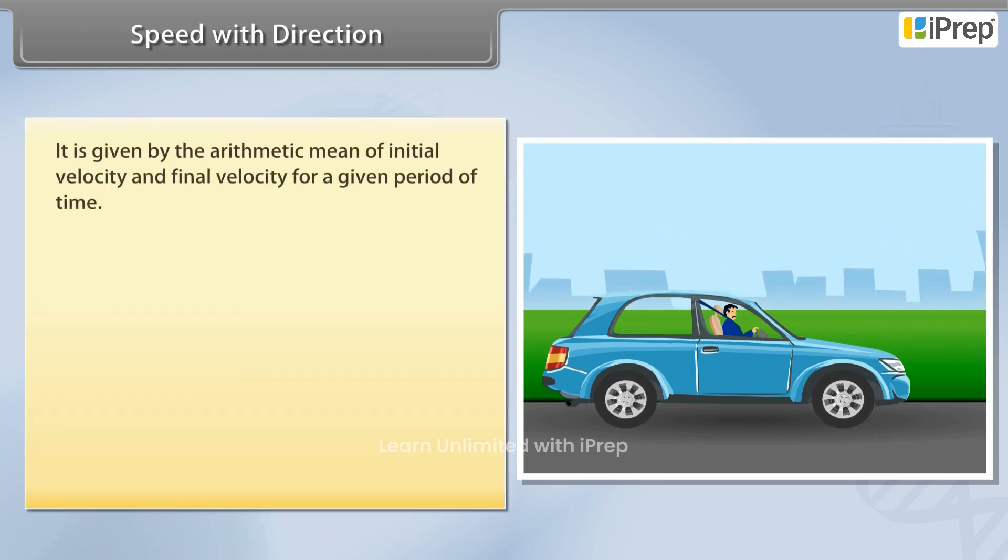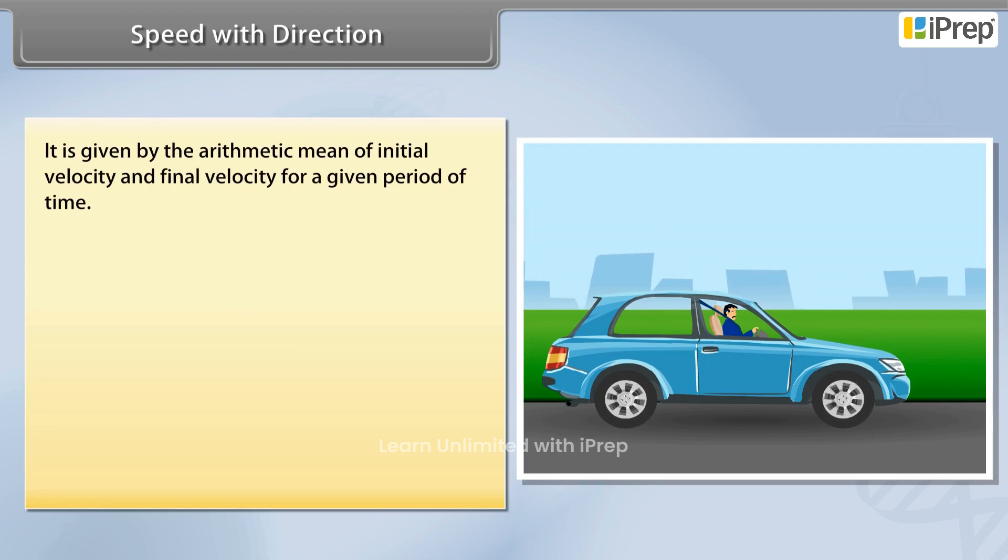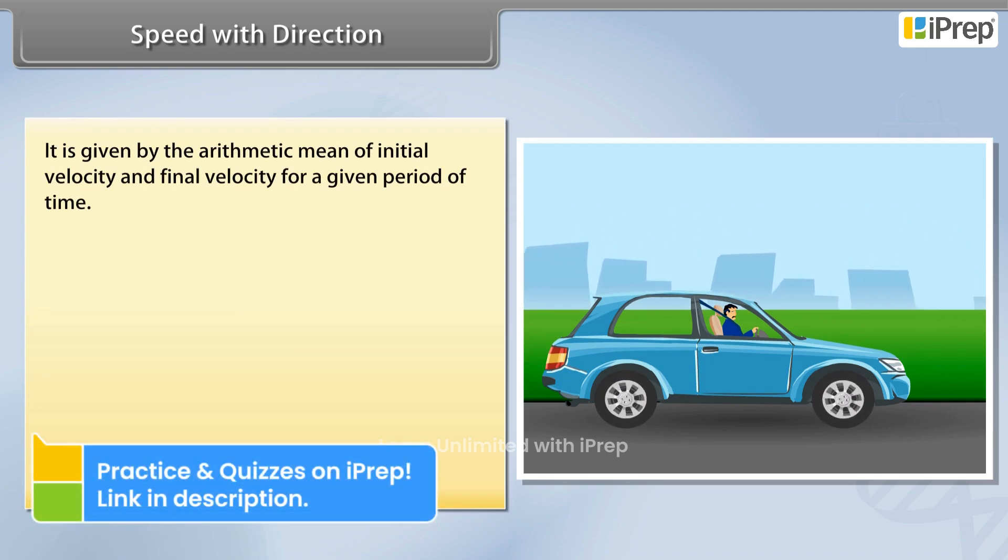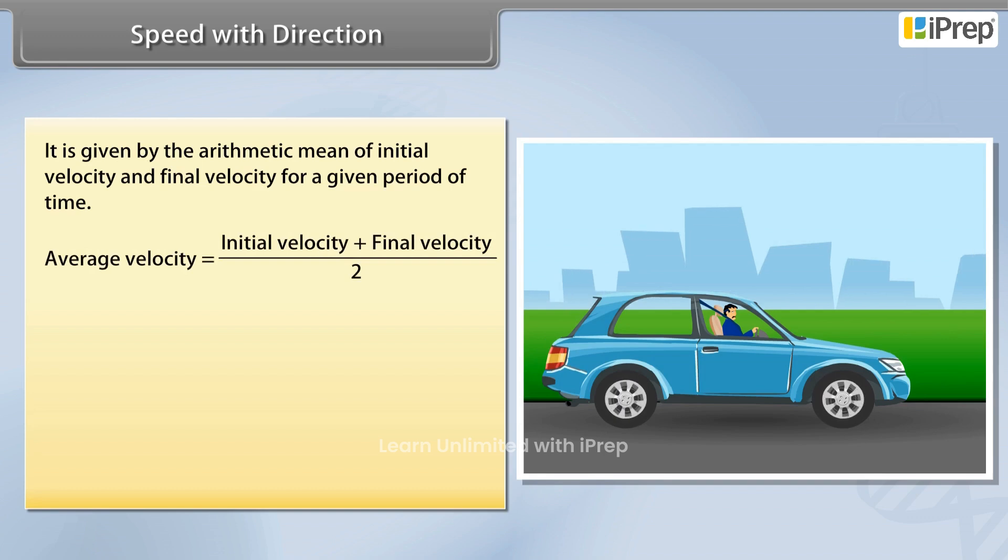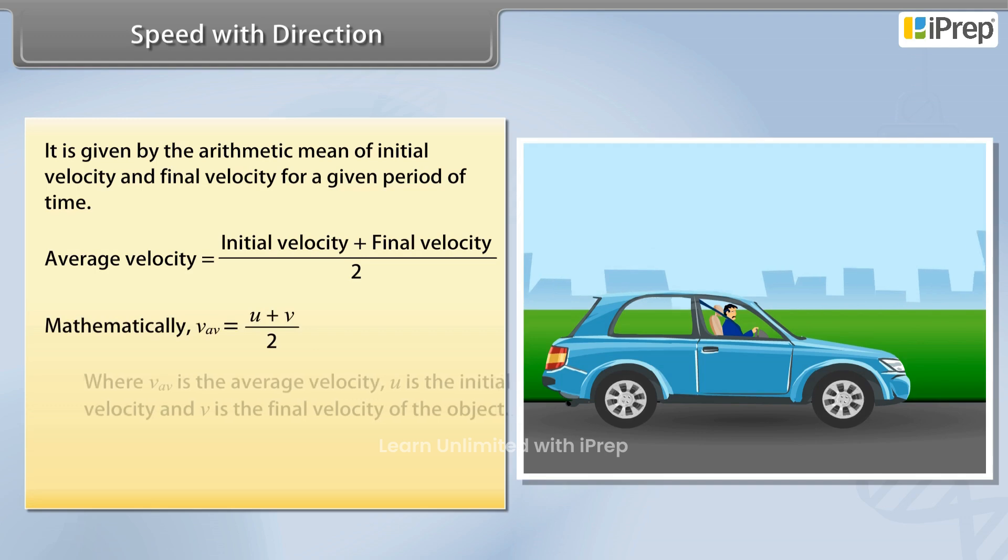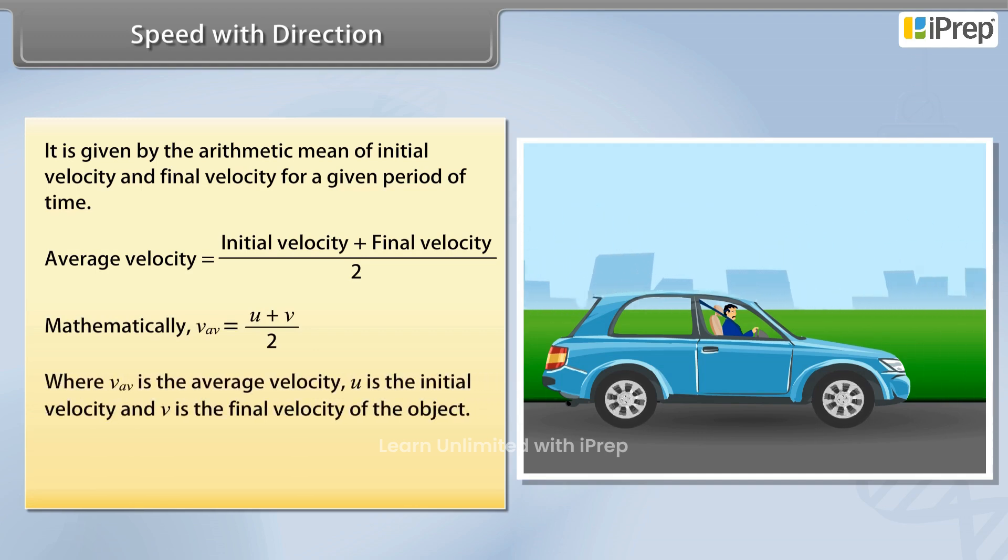It is given by the arithmetic mean of initial velocity and final velocity for a given period of time. That is, average velocity equals (initial velocity + final velocity) / 2, where v_av is the average velocity.